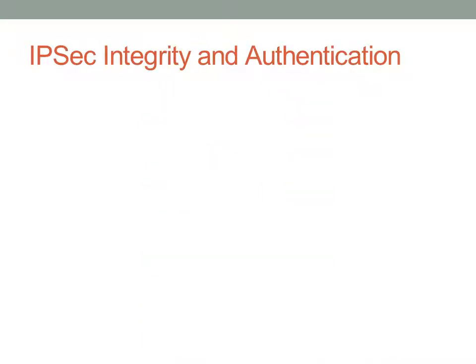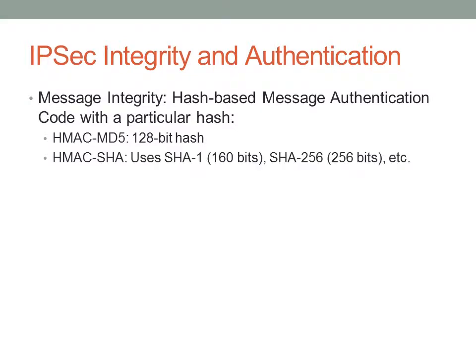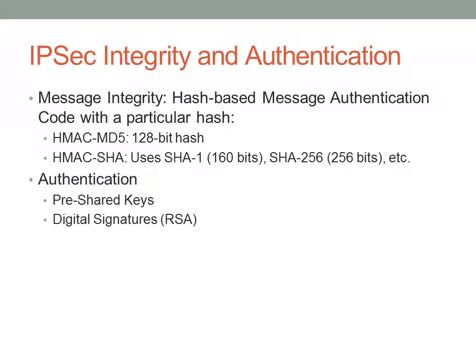Now we talk about integrity and authentication on an IPsec network. Message integrity is done with hash-based methods of authentication. You can use HMAC MD5, which uses an MD5 hash that is 128 bits, or you can use SHA hashes, which is considered HMAC SHA. Authentication is typically done with either pre-shared keys or digital signatures, which is RSA.